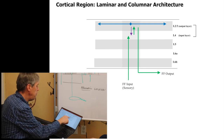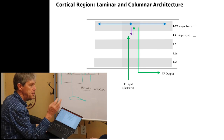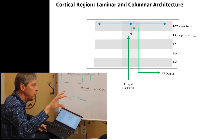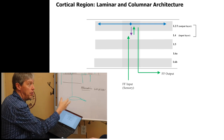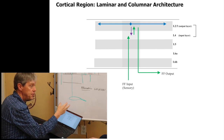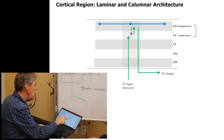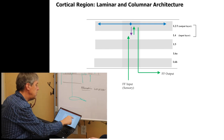Layer four — shown in the green arrows — projects to layer two, three. That's our end. Layer two, three is an output layer. Those are literally the cells in layer two, three that project elsewhere in the cortex. So you have a two-layer structure: an input layer and an output layer. This is well known — nothing speculative about this at all. Also, layer two, three projects long distances, and it projects back to layer two.